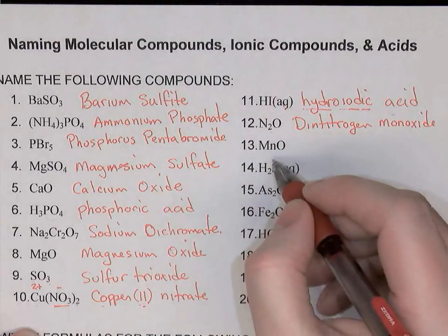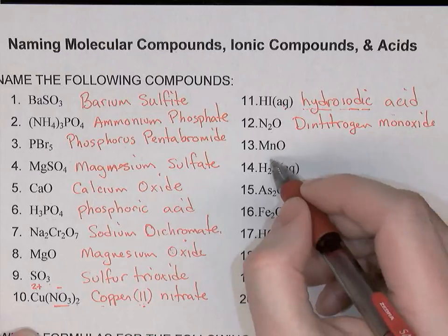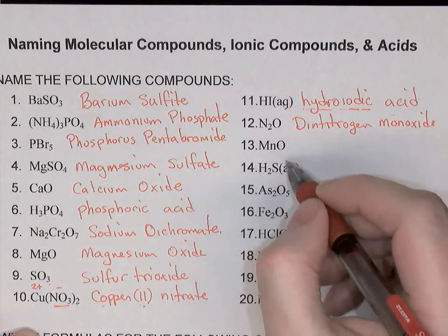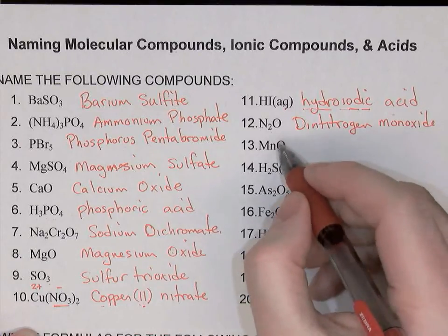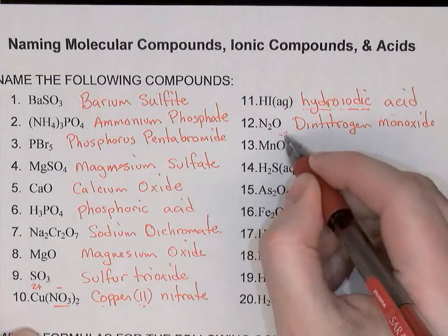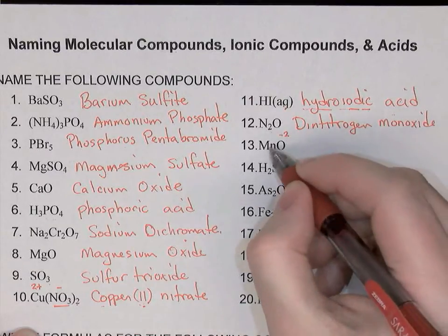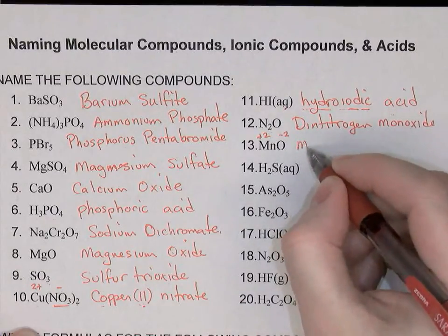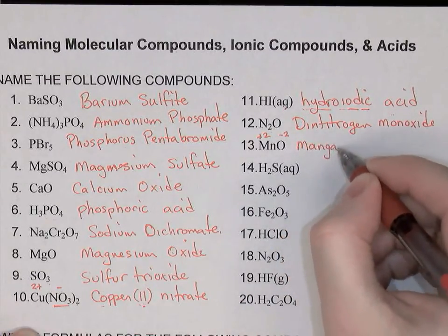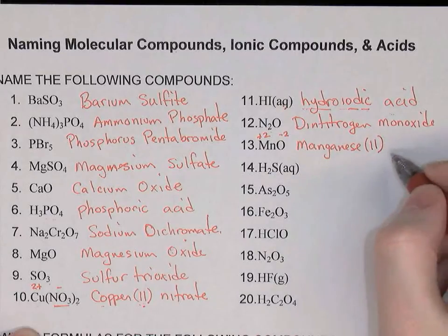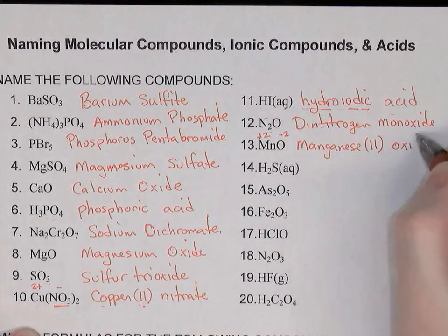Number 13: manganese is again a metal, so this is an ionic compound. Manganese is a type 2 cation, so we have to state its charge with a Roman numeral. The oxygen is -2, so the manganese must be +2 in this compound. The name would be manganese(II) oxide.